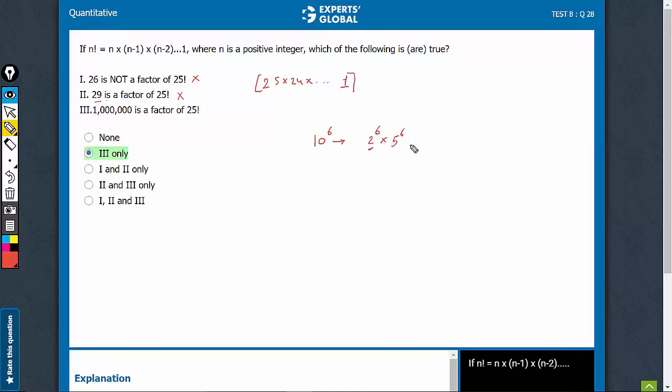So 6 2's is never going to be a problem. It's about 5 raised to power 6. So see 5, 10, 15, 20, they would each have 1 5 in it. So they would leave a 5 raised to power 4 and 25 has 2 5's in it, 5 raised to power 2.